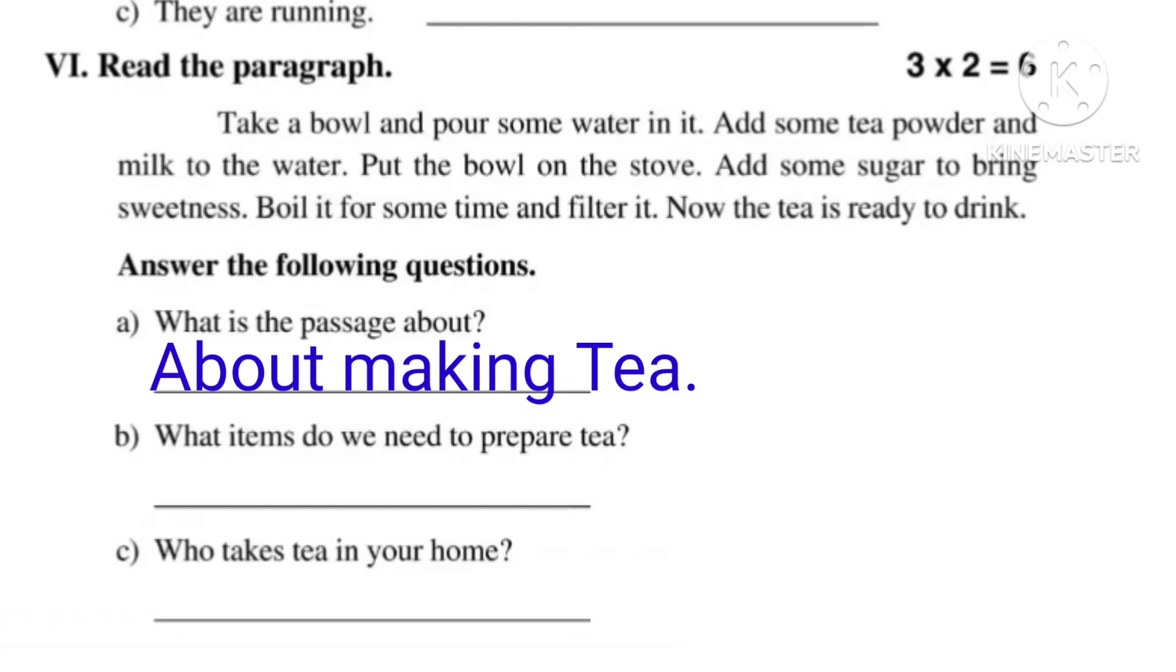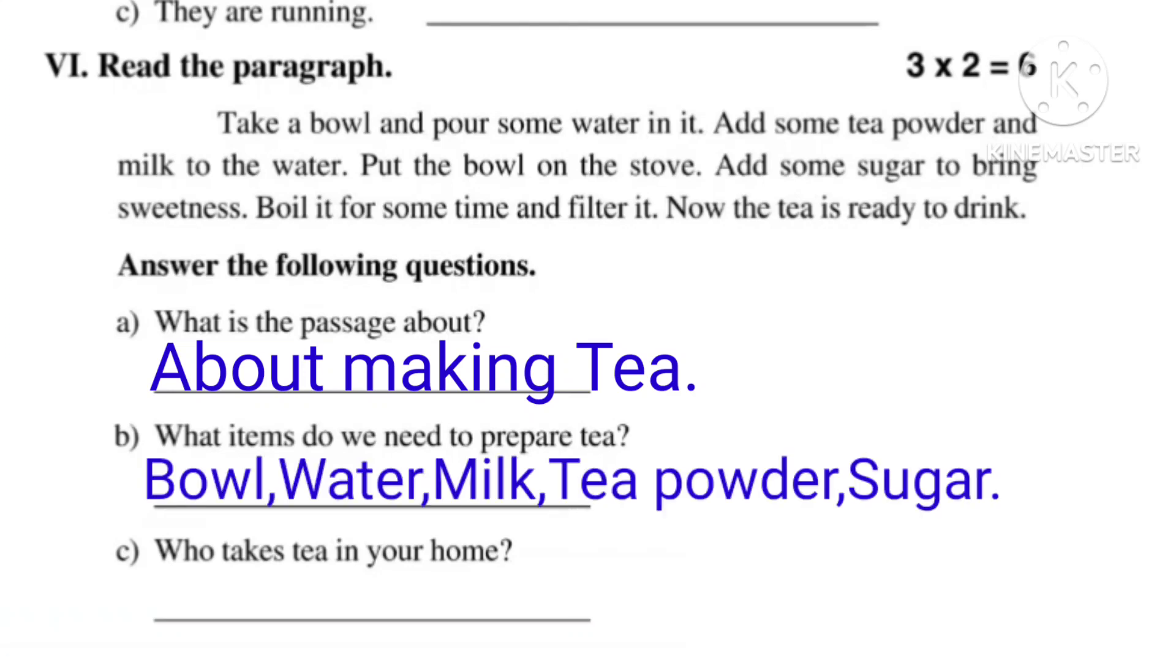B: What items do we need to prepare tea? Answer: Bowl, water, milk, tea powder, sugar.